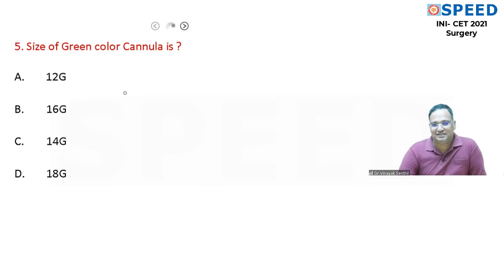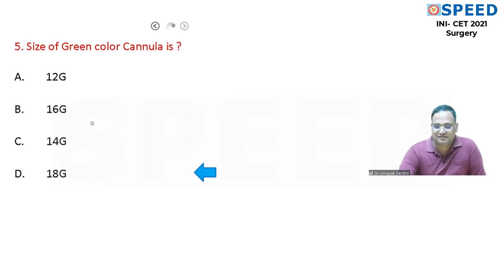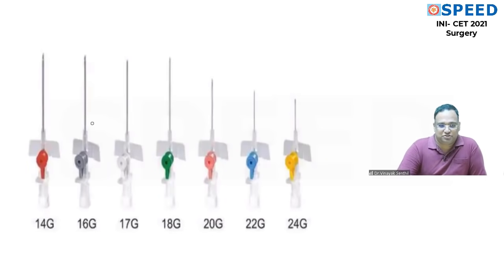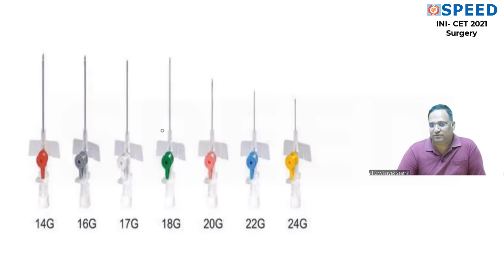Question five about cannula sizes is a straight repeat from last year's INISET exam. The answer is 18 gauge for a green cannula. The color coding: red = 14G, grey = 16G, white = 17G, green = 18G, pink = 20G, blue = 22G, yellow = 24G.